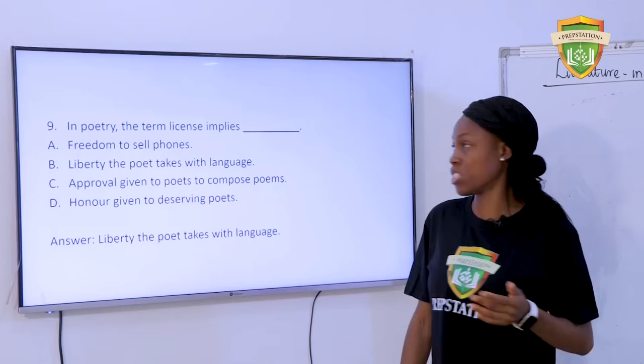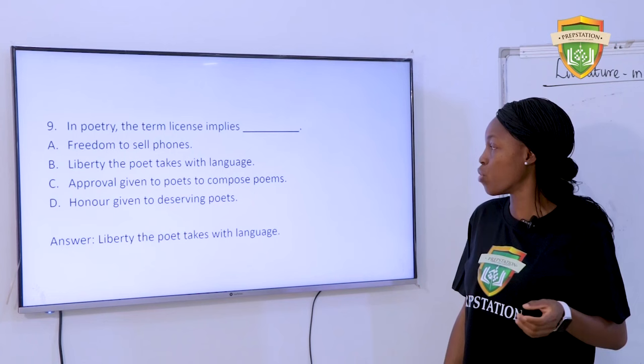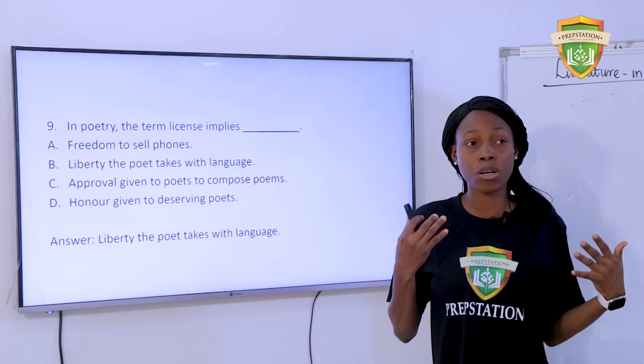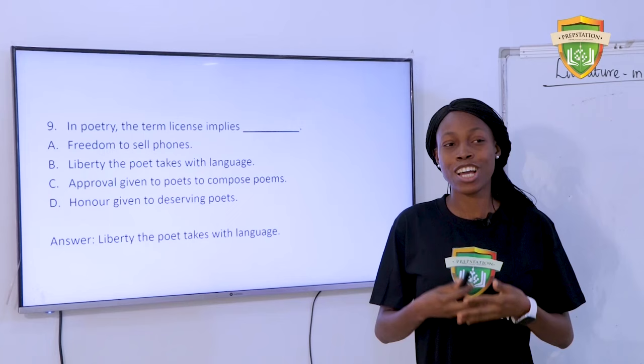In poetry, the term 'license' implies — A. Freedom to sell phones. B. Liberty the poet takes with language. C. Approval given to poets to compose. D. Honor given to deserving poets. The answer is B: liberty the poet takes with language. Poetic license has to do with the fact that a poet could make use of language whatever way he chooses.